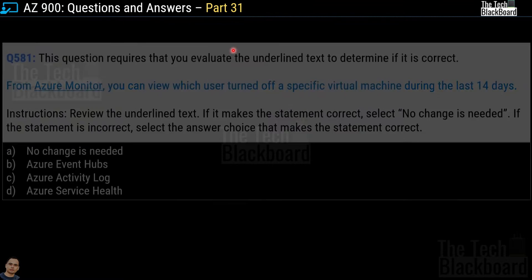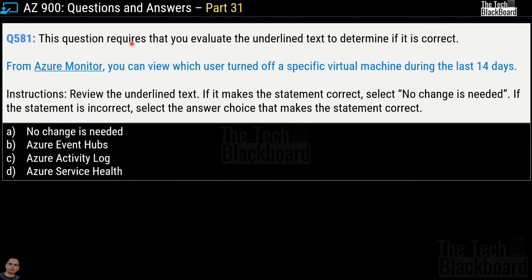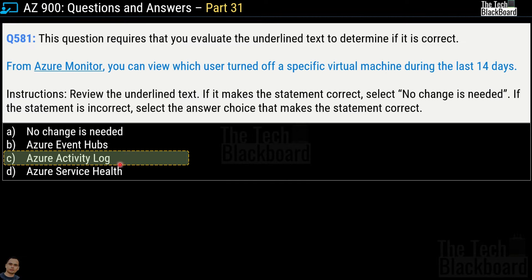Question 581 requires you to evaluate the underlined text to determine if it is correct. The statement reads: 'From Azure Monitor you can view which user turned off a specific virtual machine during the last 14 days.' The options are: no change needed, Azure Event Hubs, Azure Activity Log, and Azure Service Health. The correct answer is option C, Azure Activity Log — so the correct statement becomes: 'From Azure Activity Log you can view which user turned off a specific virtual machine during the last 14 days.'